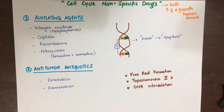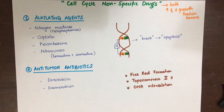The second group of non-cell cycle specific drugs are anti-tumor antibiotics, which work by three mechanisms: free radical formation, topoisomerase 2 inhibition, and intercalation of DNA. These include the drugs doxorubicin and daunorubicin.